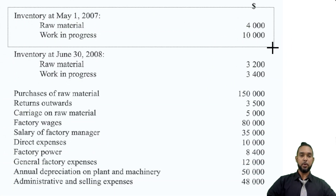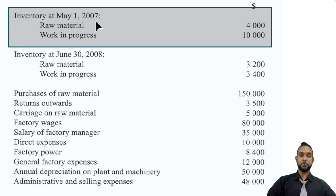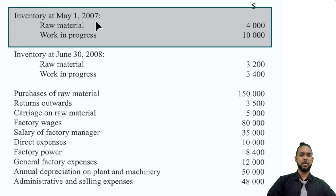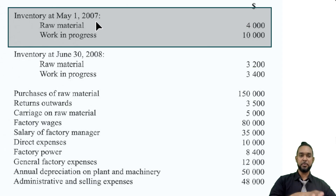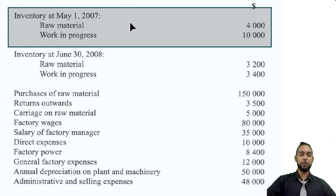They start us off with the inventory at May 1st, 2007. If the current year end is June 30th, 2008, I think they made a mistake here — because if May 1st, 2007 was the start of the year, April 30th, 2008 should be the end. May 1st, 2007 to June 30th, 2008 is 14 months. So we'll just assume they meant July 1st, 2007.